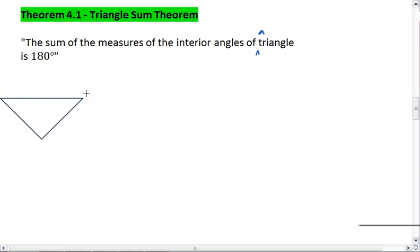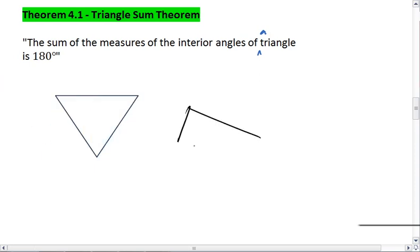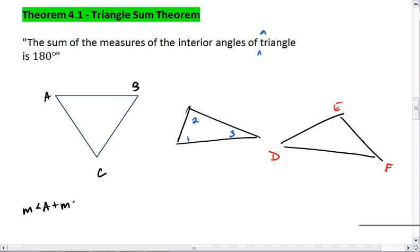So, given any triangle, it doesn't matter what its shape is, as long as it's a triangle, we know that the measure of angle A plus the measure of angle B plus the measure of angle C equals 180 degrees.